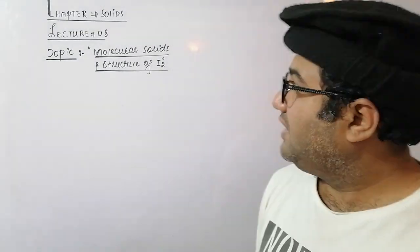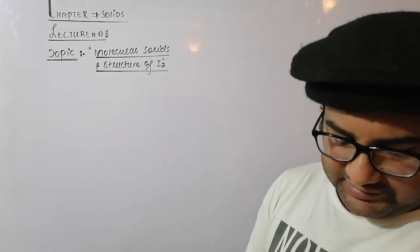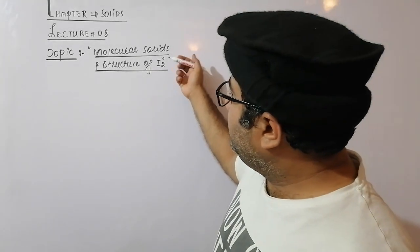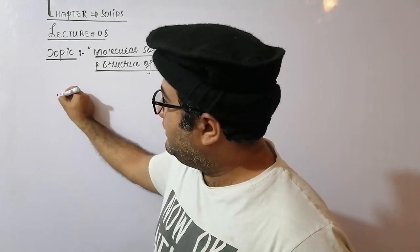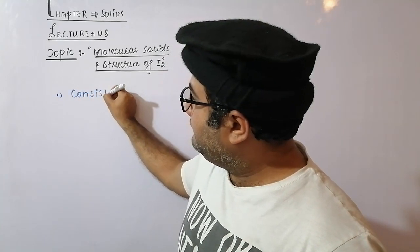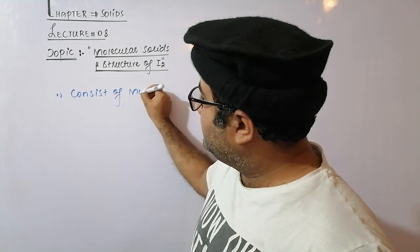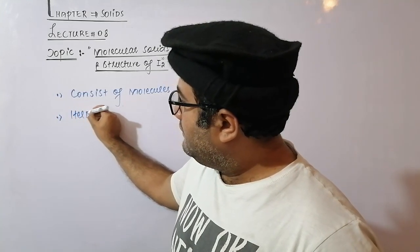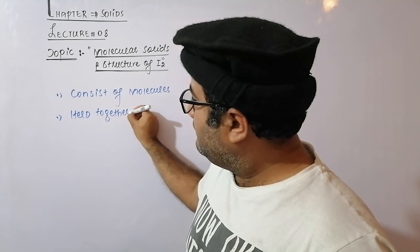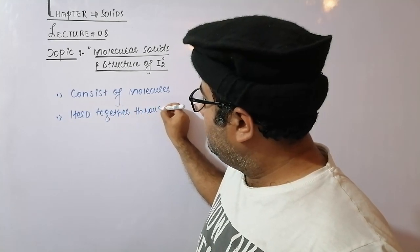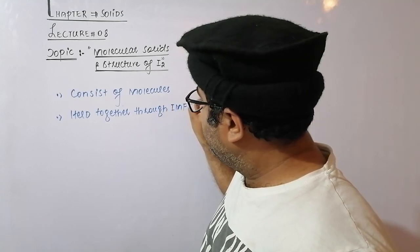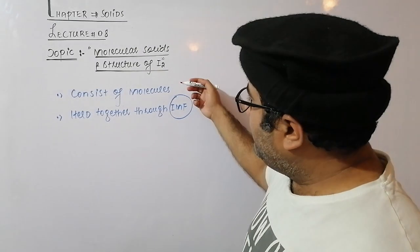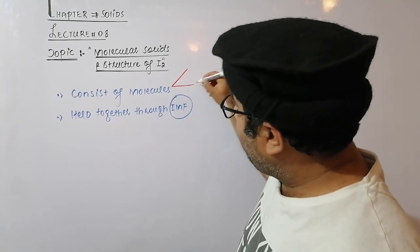Welcome everybody. Now let's start lecture number eight of the chapter Solids, that is about molecular solids and the structure of iodine. Molecular solids are the solids that consist of molecules, and these molecules are held together through intermolecular forces.